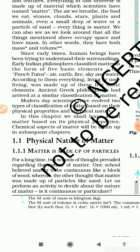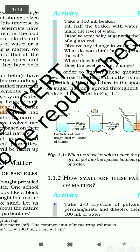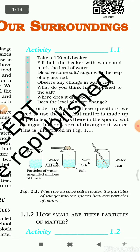Let us perform an activity to decide about the nature of matter — is it continuous or particulate? We can do this experiment at home because all the materials are available at home. In the lab we use a beaker, spoon, and glass rod. At home you can use a glass tumbler and a spoon. Let us start this activity now.